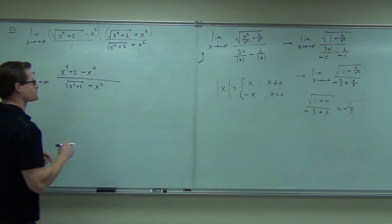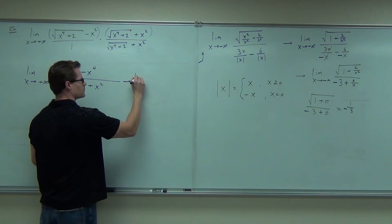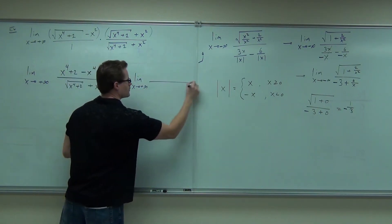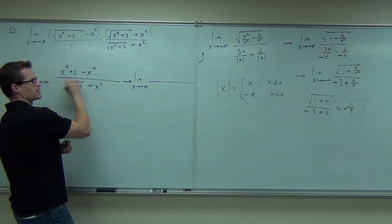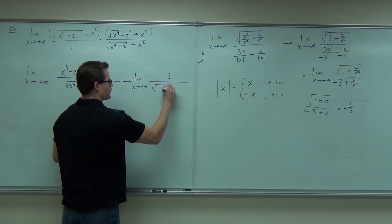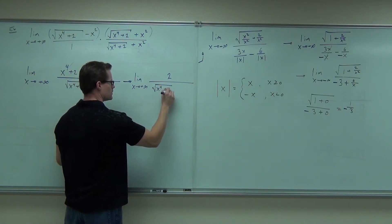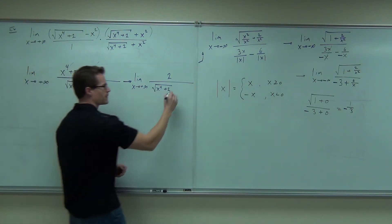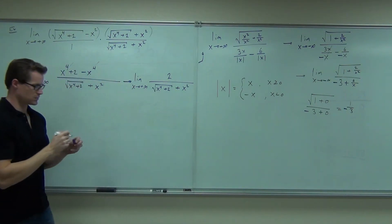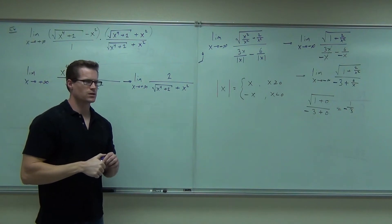What happens here that's nice? 2 square root of x to the fourth plus 2 plus x squared. So far so good?